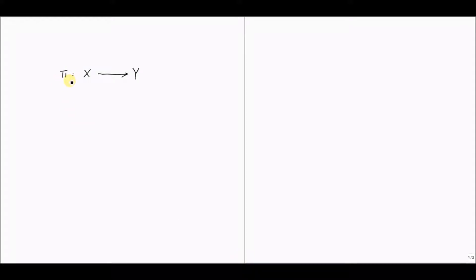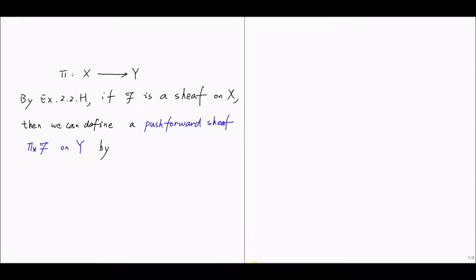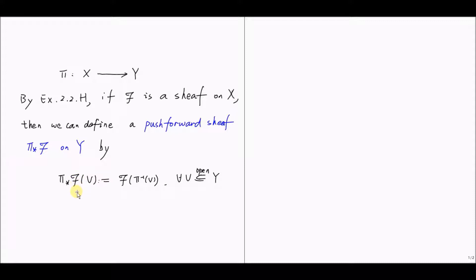Let π be a continuous map from the topological space X to the topological space Y. By Exercise 2.2.h, if script F is a sheaf on X, then we can define a push-forward sheaf π_* F on Y by setting π_* F of any open subset V to be the sections of F over π inverse of V. There will be naturally induced restriction maps. Since F is a sheaf satisfying the glueability axiom and identity axiom, we can prove that π_* F also satisfies these two axioms, so π_* F is a sheaf.